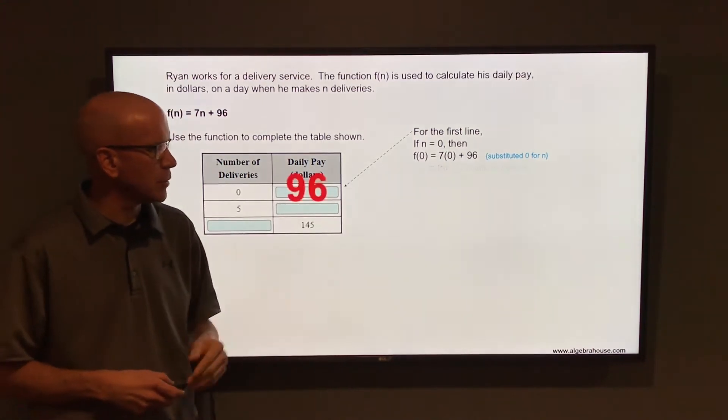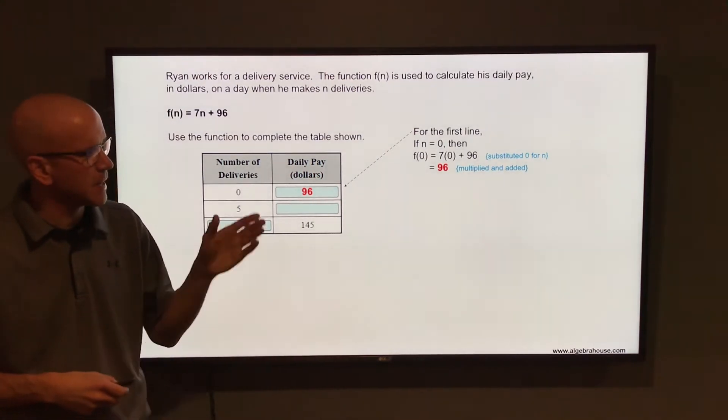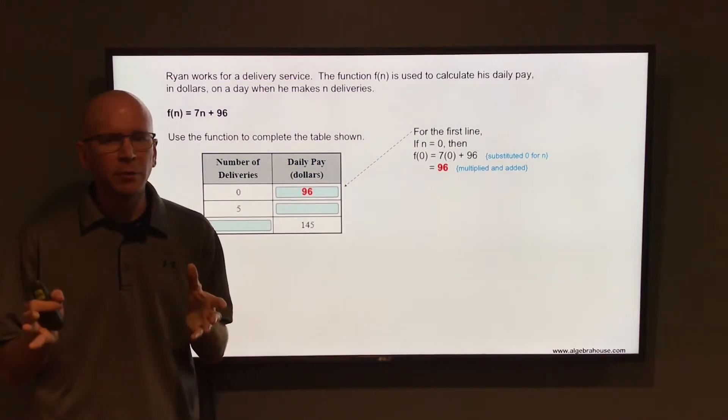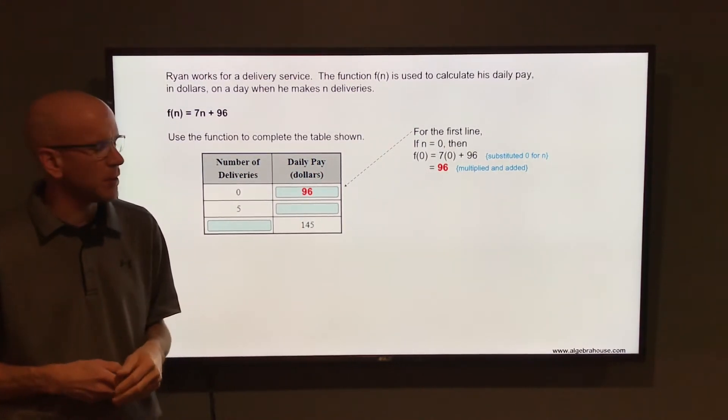7 times 0 is 0 plus 96. That is 96 dollars. So he's making 96 dollars for zero deliveries. That's pretty good pay if we're not doing much of anything.